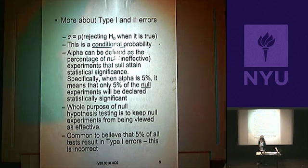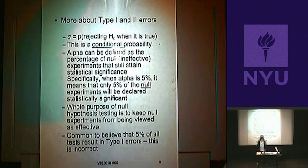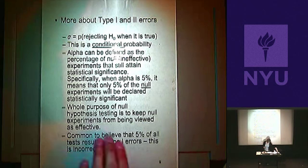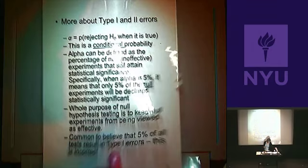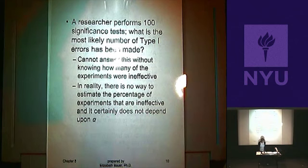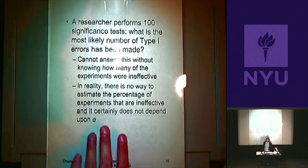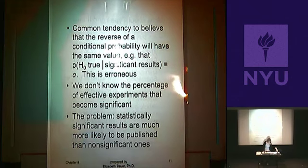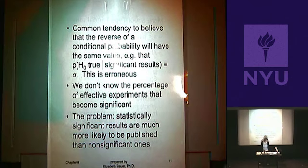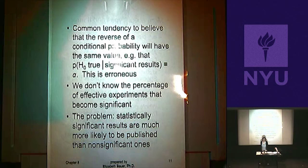If you view the alpha level as a spam filter, how high do you set it? The textbook walks through Bayes' theorem using this analogy — you won't be held responsible for calculating it, but it's helpful to understand. A common mistake is to believe that 5% of all tests result in Type 1 errors — that's not right. There's no way to estimate the percentage of experiments that are ineffective, and it doesn't depend on alpha.